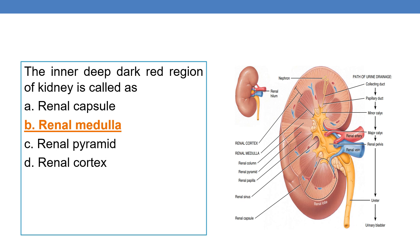Now coming to the next question: the inner deep dark red region of the kidney is called the renal medulla. Here you can see this is the dark red region — it is called the renal medulla. The outer region is called the renal cortex, and this region is called the renal hilum.